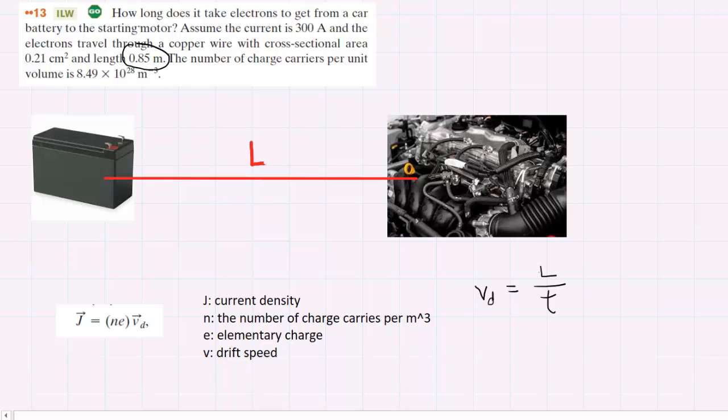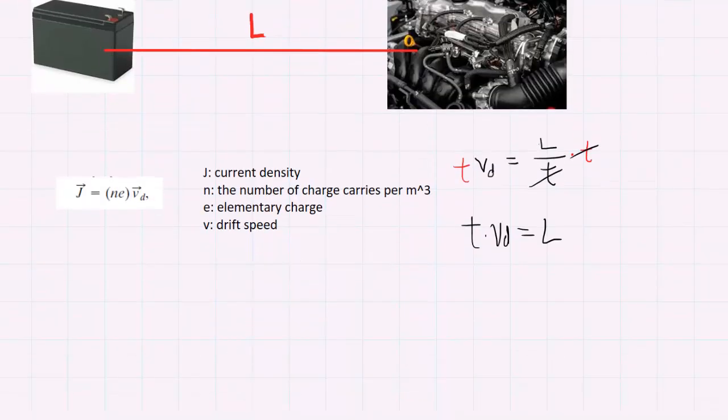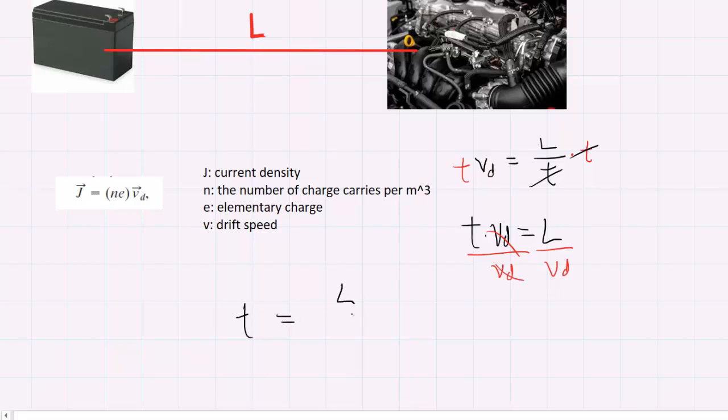Because we're asked how long it takes, we're solving for time. So we multiply both sides by time: t times drift speed equals L. Then dividing both sides by drift speed, we get that time equals L divided by drift speed. We already have the length. Let's talk about the drift speed.